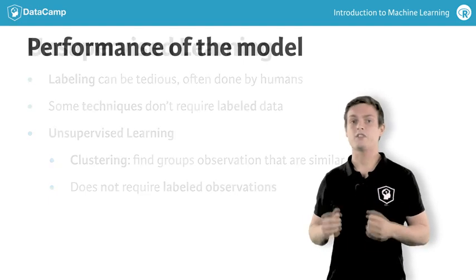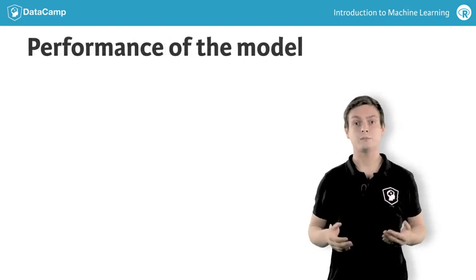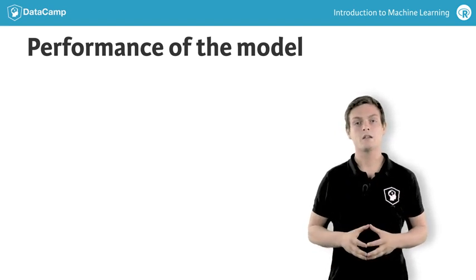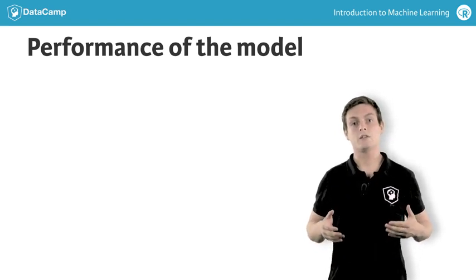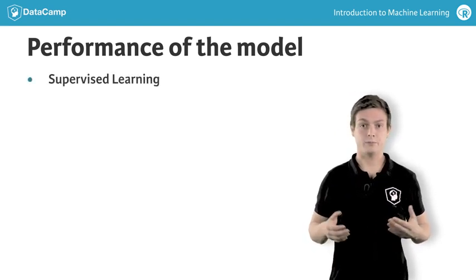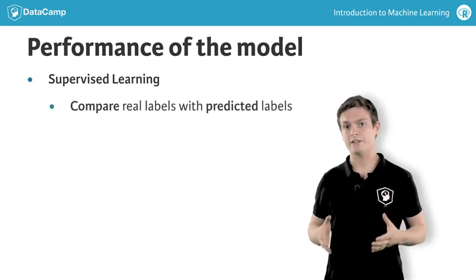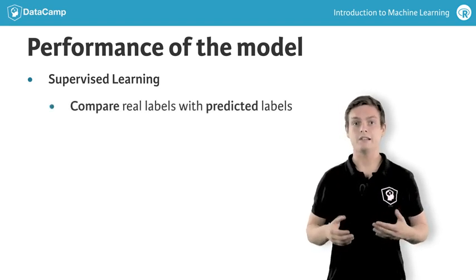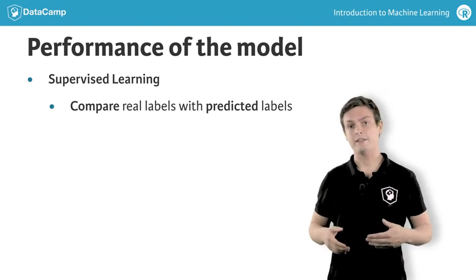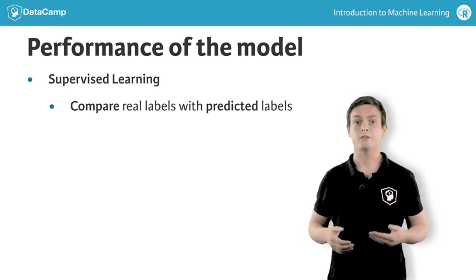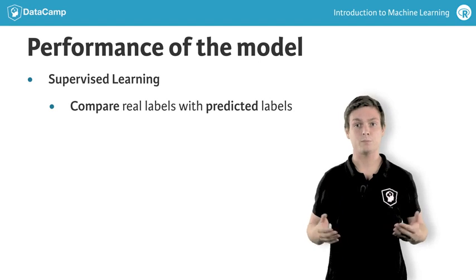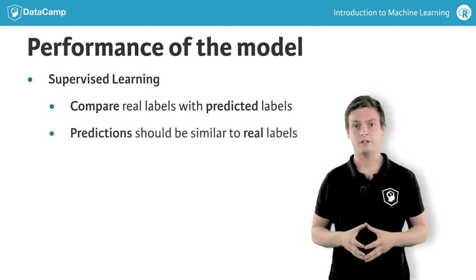In the next chapter, we will talk about assessing the performance of your trained model. In supervised learning, we can use the real labels of observations and compare them with the labels we predicted. It is quite straightforward that you want your model's predictions to be as similar as possible to the real labels.